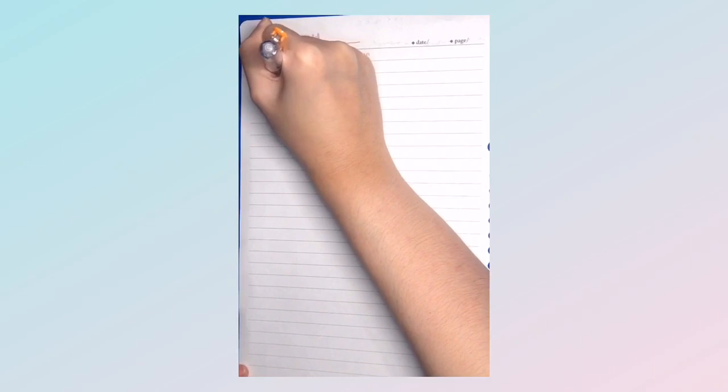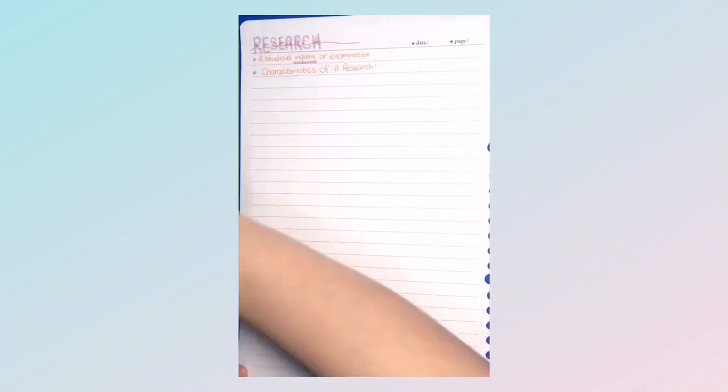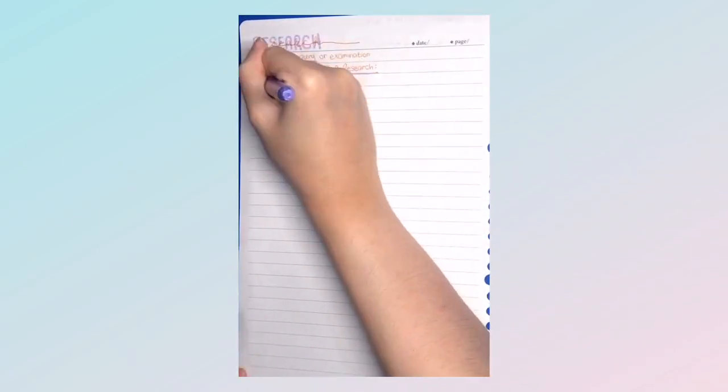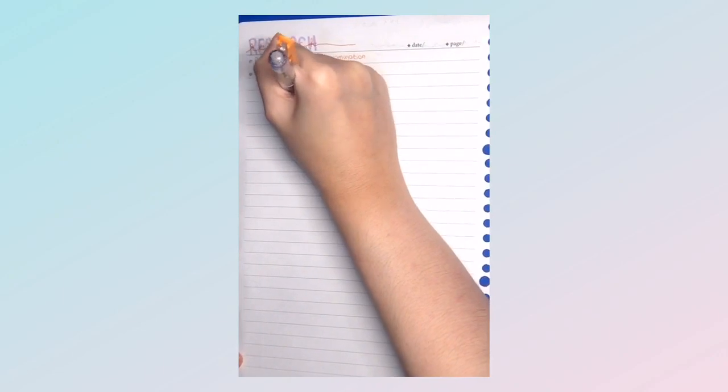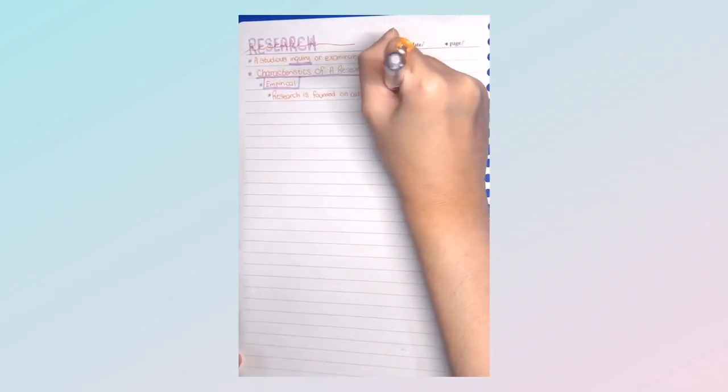Another tip is to draft your notes on what info you should put so that you won't waste time putting useless information. Another tip is to experiment on different note-taking styles like the Cornell method and see what note-taking style works for you.